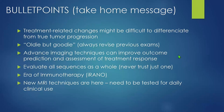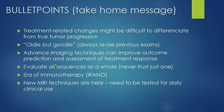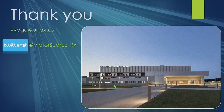The take-home messages are: treatment-related changes may be difficult to differentiate from tumor progression, and advanced imaging — perfusion, spectroscopy, or whatever you feel comfortable with — can aid this assessment. Always revise previous exams if possible — oldie but goodie. Advanced imaging techniques can improve outcome prediction and assessment of treatment response. Evaluate all sequences as a whole and never trust just one sequence, even if it is advanced imaging. We are in the era of immunotherapy and the iRANO criteria must be taken into account. New MRI techniques such as APT amide proton transfer are emerging, but they still need to be tested for daily clinical use. Thank you very much for your attention.